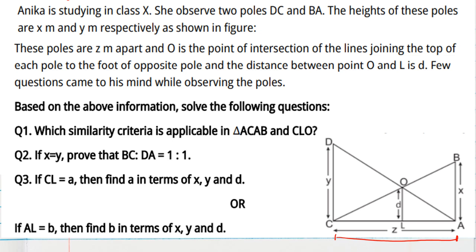O is the point of intersection of the line joining the top of each pole to the foot of the opposite pole. The distance between O and L is given as D. Everything is mentioned in the diagram, which is also given in the question.